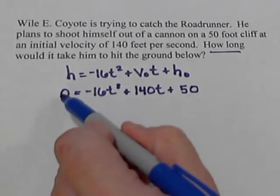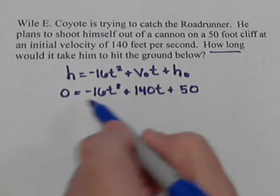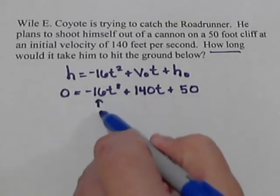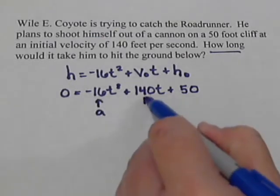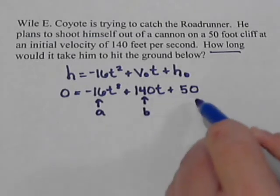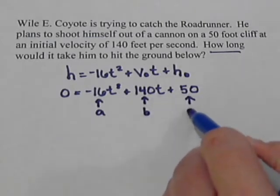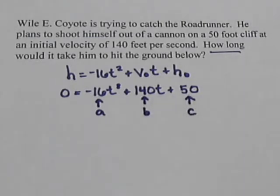When we go to use the quadratic formula, because we have a zero here, we want to solve this. Our a will be negative 16. Our b will be 140. And our c will be 50.